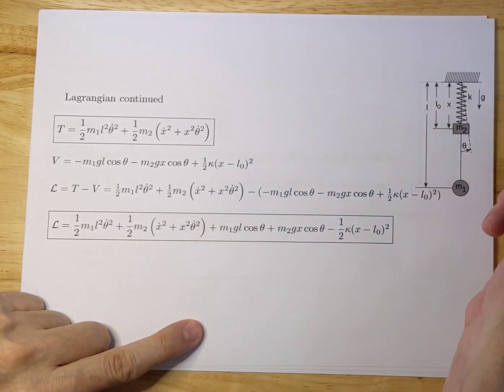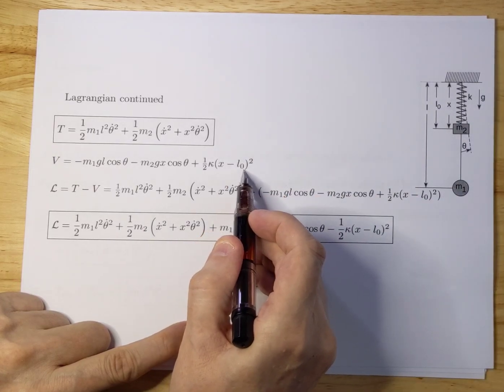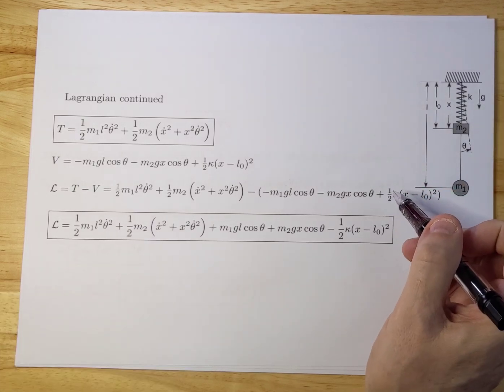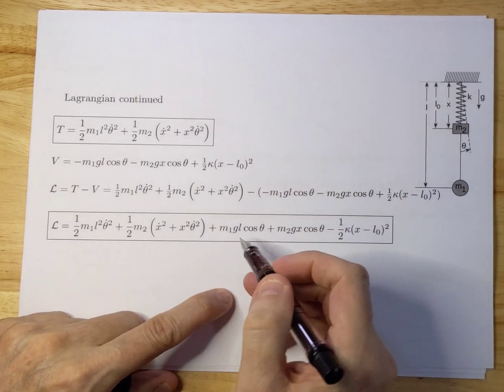Once you start to modulate the system, then X will vary with respect to L zero and you get a certain delta. You get either compression or relaxation of your spring.